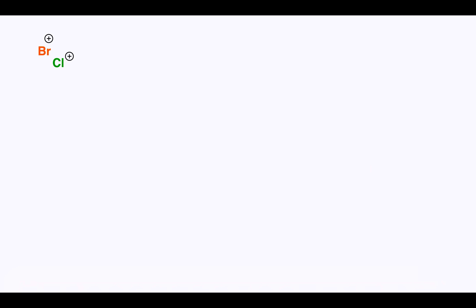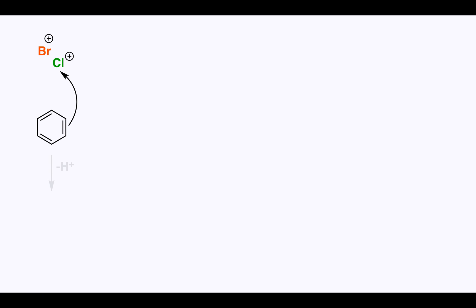Now that we've looked at the general electrophilic aromatic substitution mechanism, let's look at the possible electrophiles that we can add to an aromatic ring. We already saw the addition of bromine, and equivalents of Cl⁺ can also be used to react with benzene. This reaction is halogenation.